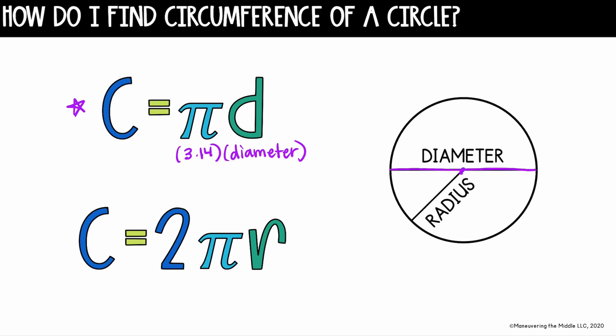Now, sometimes we see on a circle the radius labeled, and the radius is half of the diameter. It's any point from the center of the circle to the outside of the circle. If I have the radius, I'm going to write the formula as C equals 2 pi r, which simply means to multiply 2 times 3.14 times the radius. And this makes sense, since the radius is half the distance of the diameter, we would just need to multiply it by 2 to find the circumference.